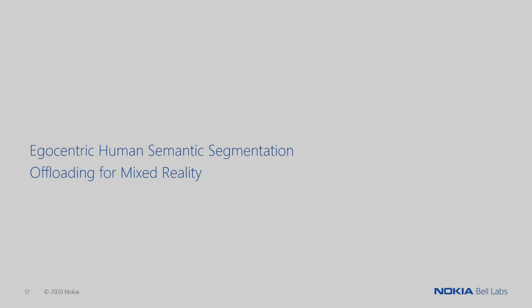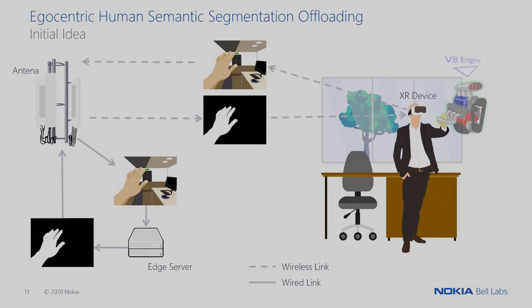Now we want to focus on the offloading of the egocentric human semantic segmentation machine learning model. This is a simplified pipeline focused on the sensors needed and the data sent back. The device sends RGB sensor data to the receiver, which sends it to the edge server. The edge server processes the data and obtains a mask that will be used for segmenting the object of interest — in this case, the user's hand or body part.